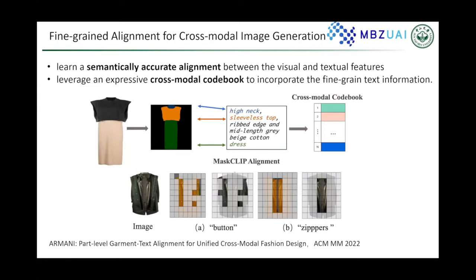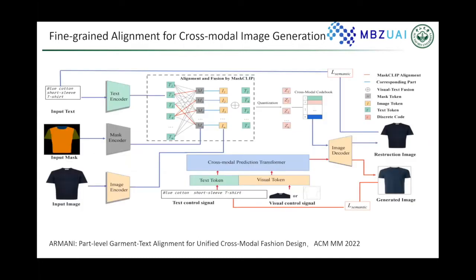To learn semantically accurate alignment between visual and text features, we leverage a very expressive cross-modal codebook to incorporate fine-grained textual information. We propose a new model named AMANI.